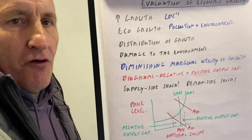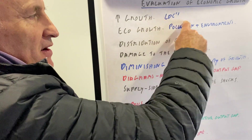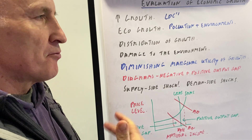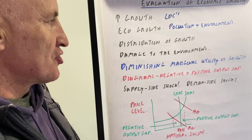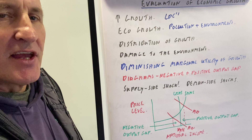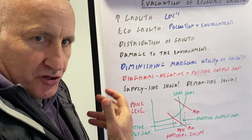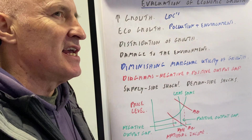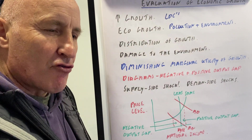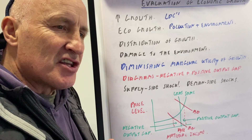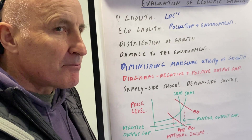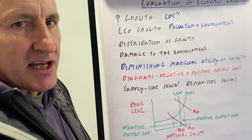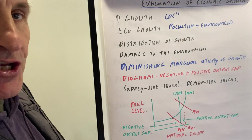Evaluating economic growth: yes, it's really important particularly in less developed countries because it brings people out of poverty. However, economic growth could harm the environment through pollution and climate change, and it also depends on how that money is distributed. There's also diminishing marginal utility of growth — in the UK, even if the rich become richer, there is diminishing marginal utility. Research has found that around £50,000 a year is the salary associated with peak happiness.